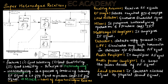The mixer performs the heterodyning operation to produce the constant intermediate frequency signal, which will be equal to FRF minus FL naught. Next is the multi-stage IF amplifier, which amplifies these intermediate frequencies, and the amplified IF signals are given as input to the detector.